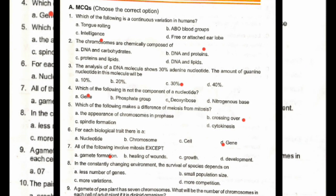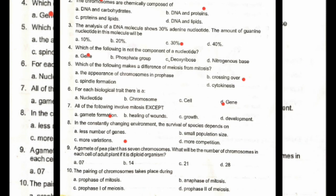In a constantly changing environment, the survival of species depends on more variation. Option C. A fern plant has seven chromosomes. What will be the number of chromosomes in each cell if it is a diploid organism? Option B: Protein. The pairing up of chromosomes takes place during prophase one of meiosis. Option C.